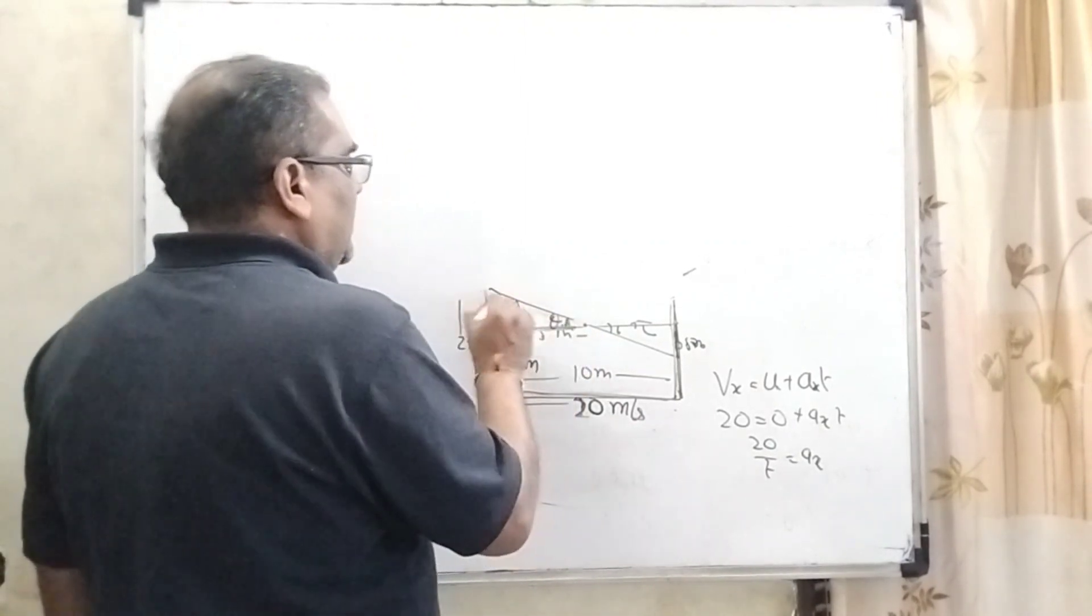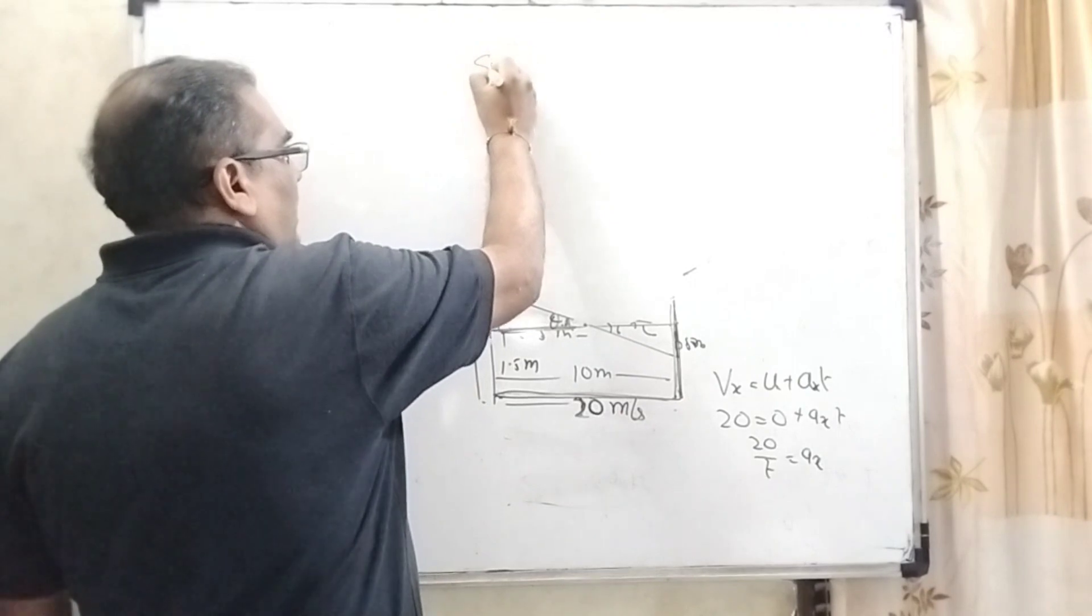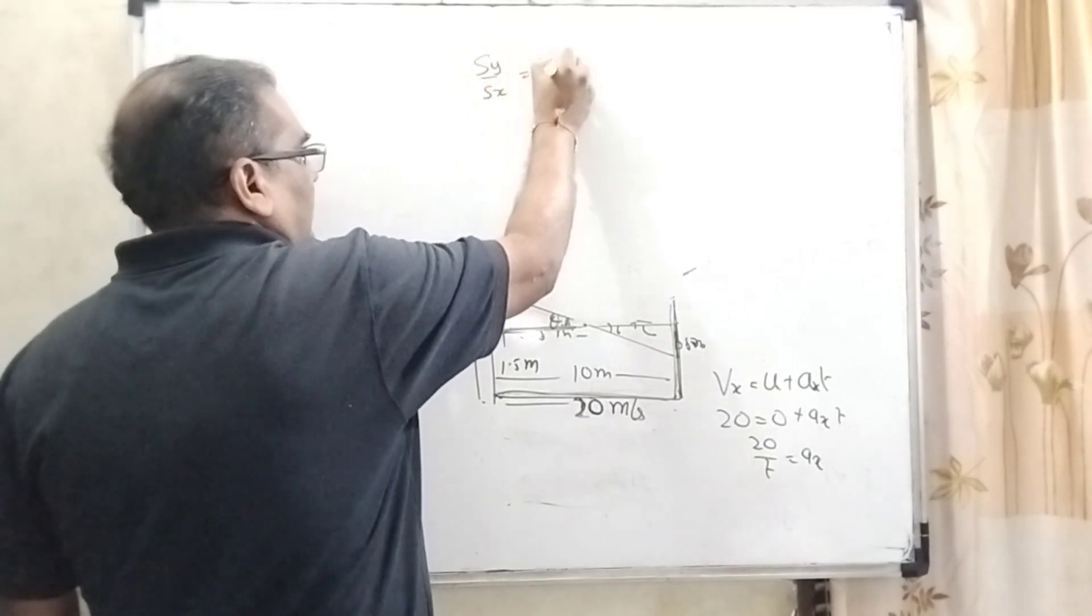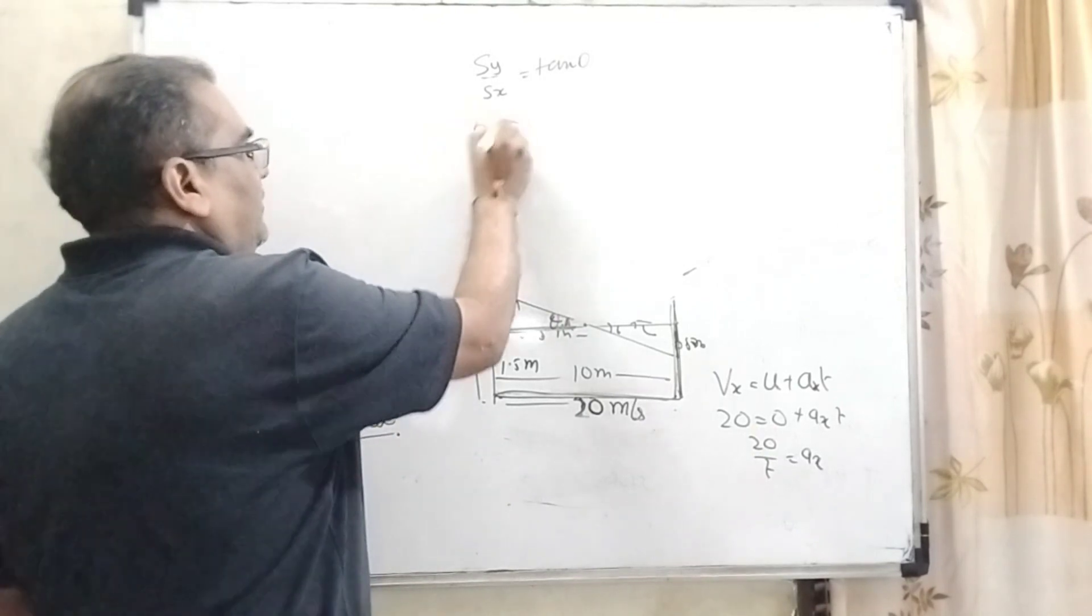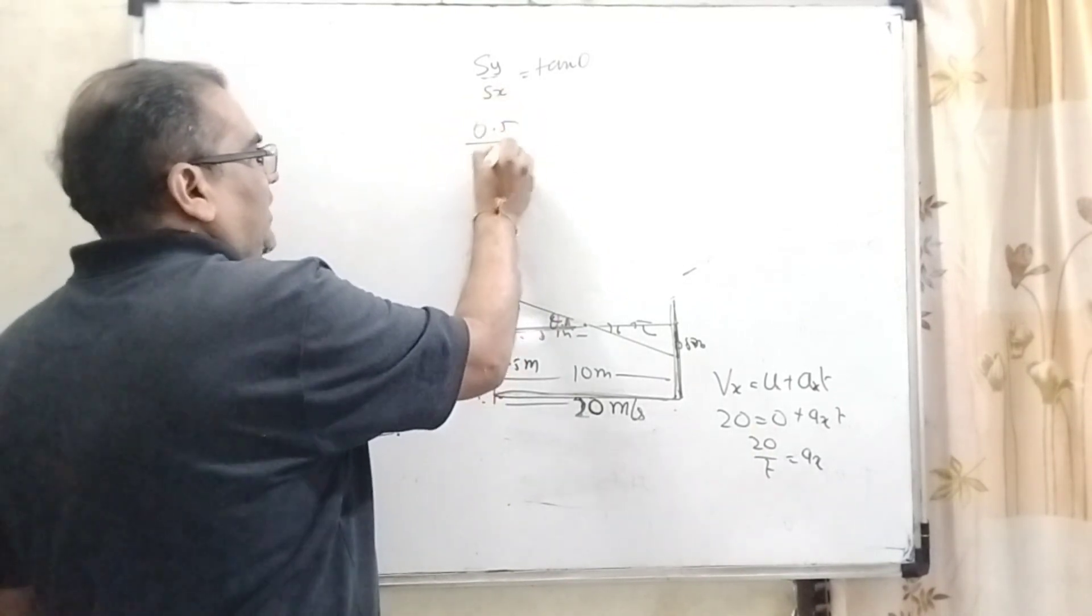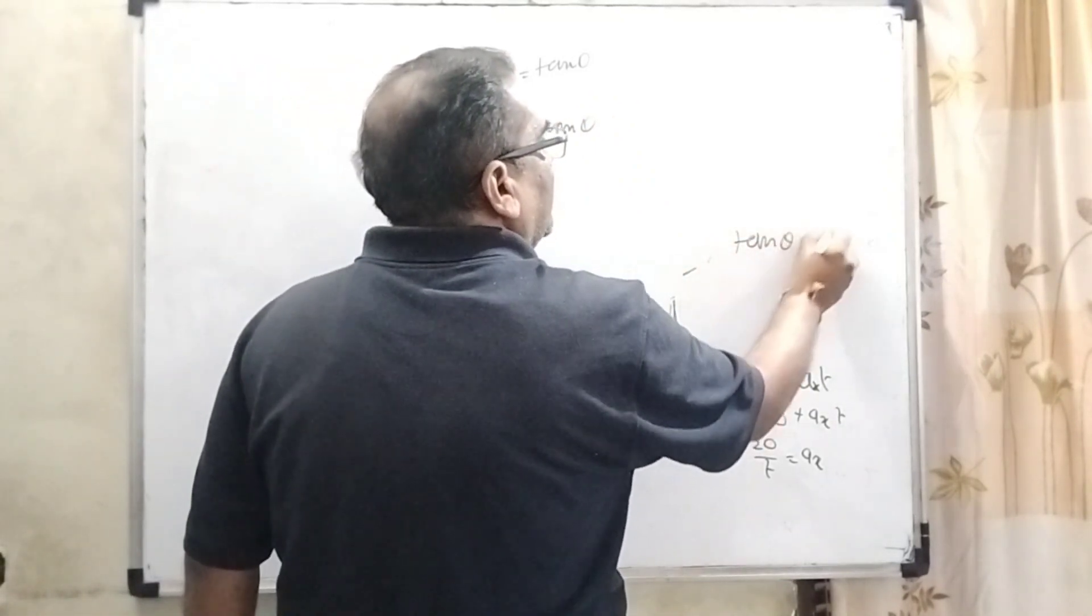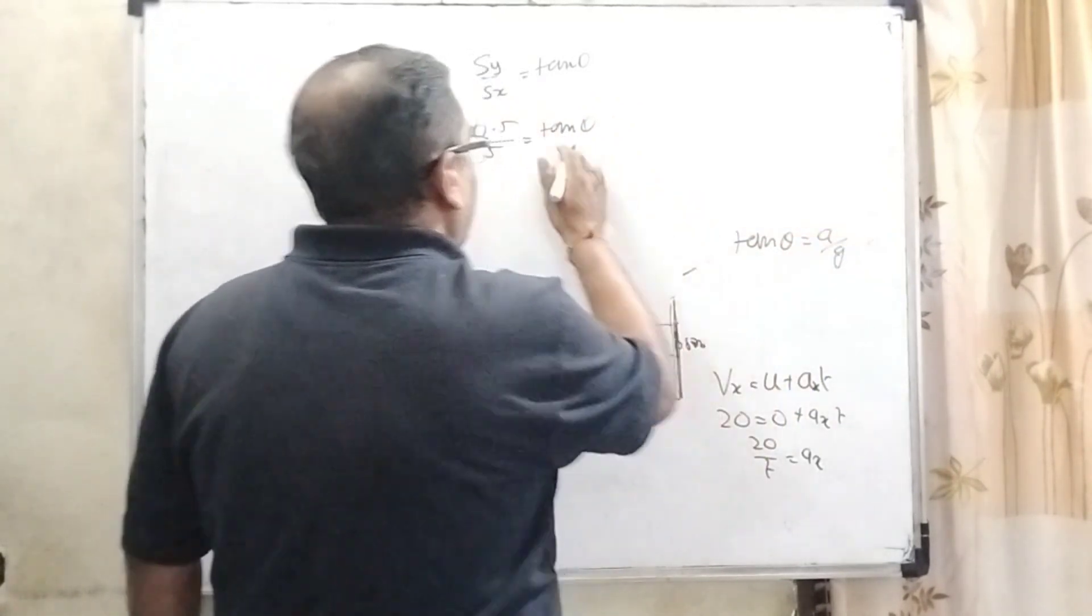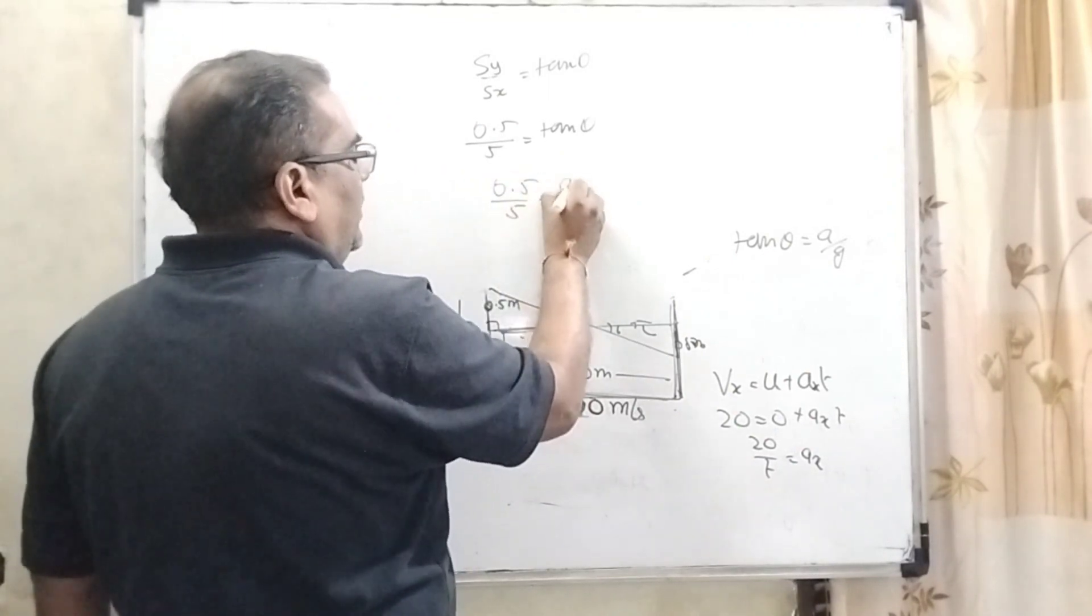So here A by G is equal to tan theta. Now we can see that it is theta. So here Sy upon Sx equal to tan theta. Then what is Sy? That is 0.5 and Sx is 5 equal to tan theta. But here A by G, we already find out that tan theta equal to A by G.